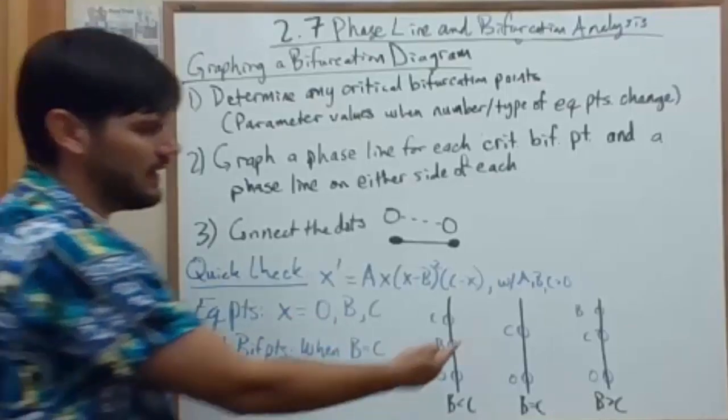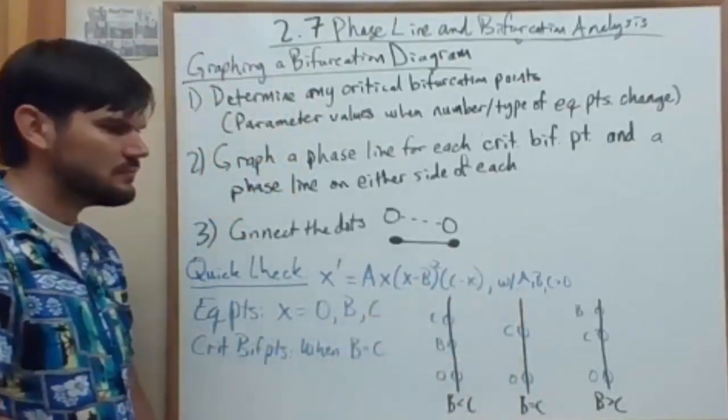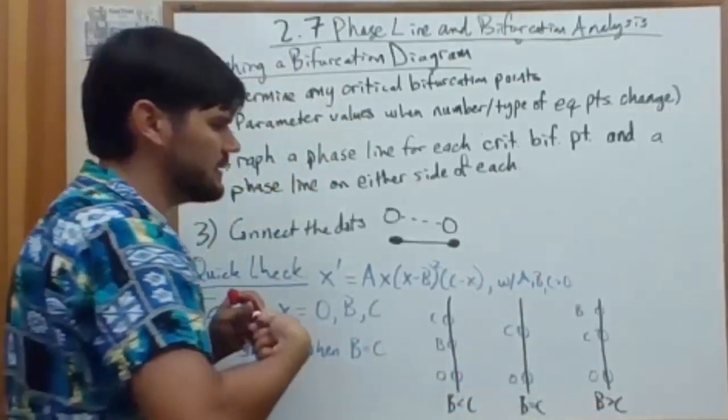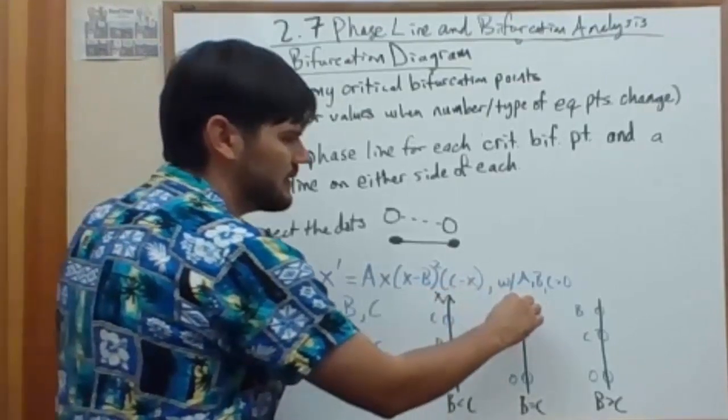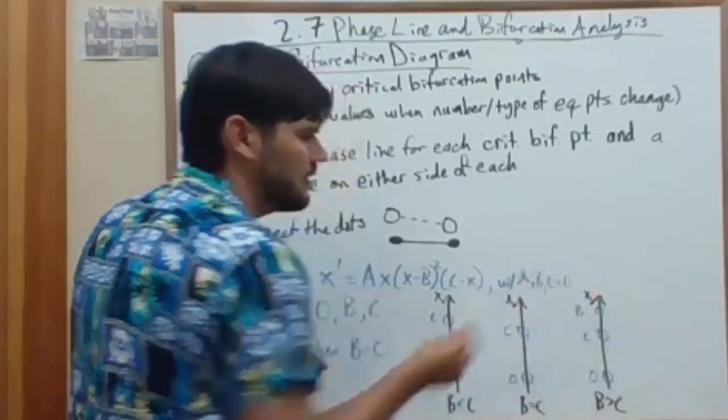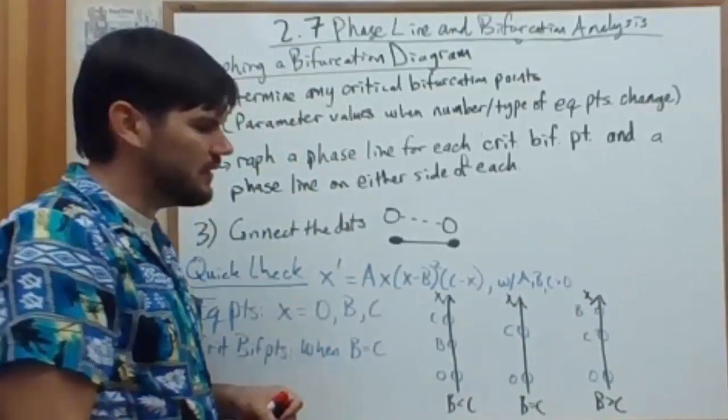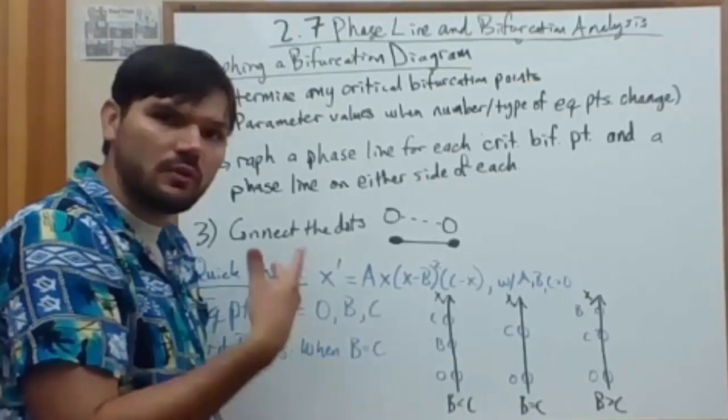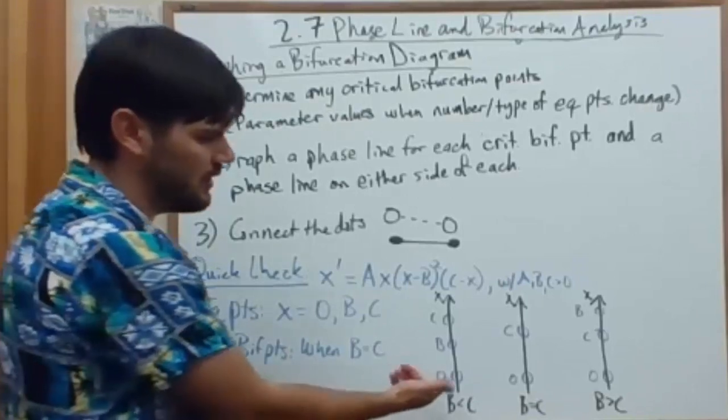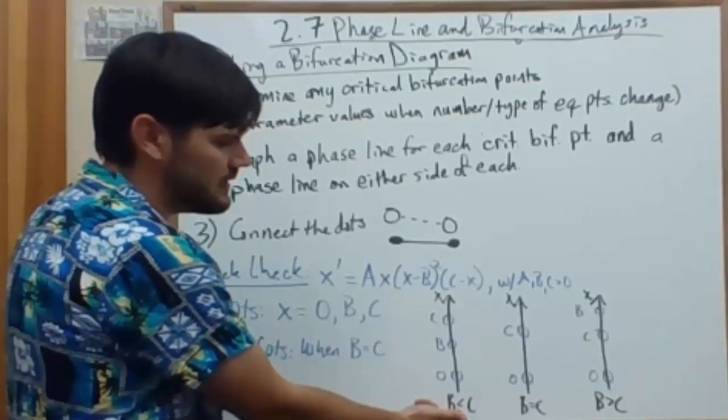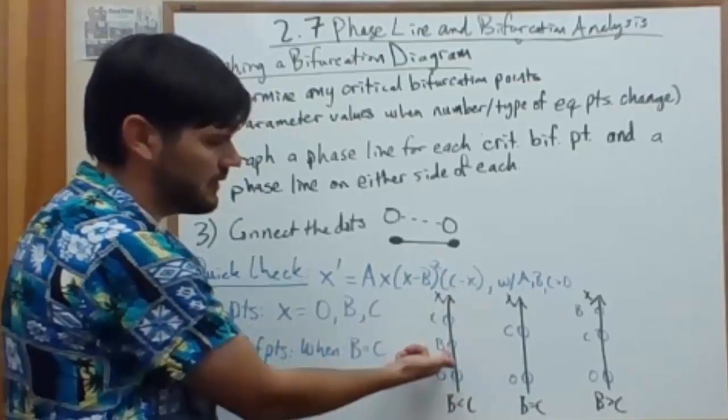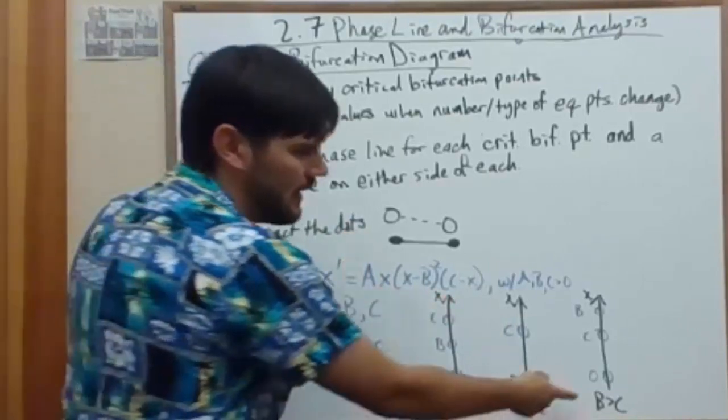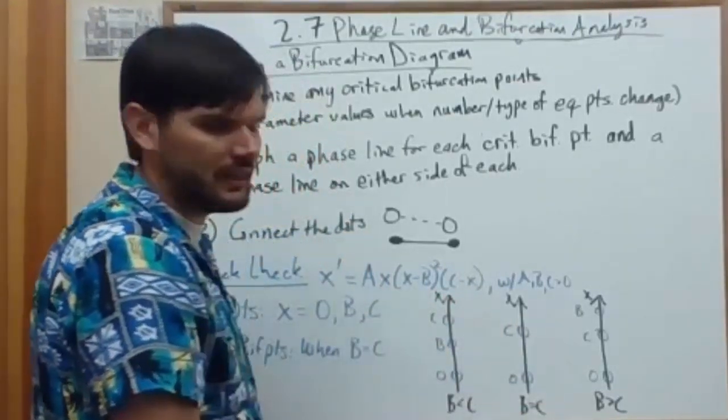So I graph that one phase line, and then I graph a phase on either side, b less than c, b greater than c. And each of these phase lines are representing the x axis. Then on those phase lines, we graph circles for the nodes, the equilibrium points, and we determine whether they're stable, unstable, or semi-stable using a sign chart. So for the first one, when b is less than c, you have three equilibrium points with b in the middle. When b equals c, you only have two. You can see that critical bifurcation happening, and then when b is greater than c, you have three again, where b is jumped up.